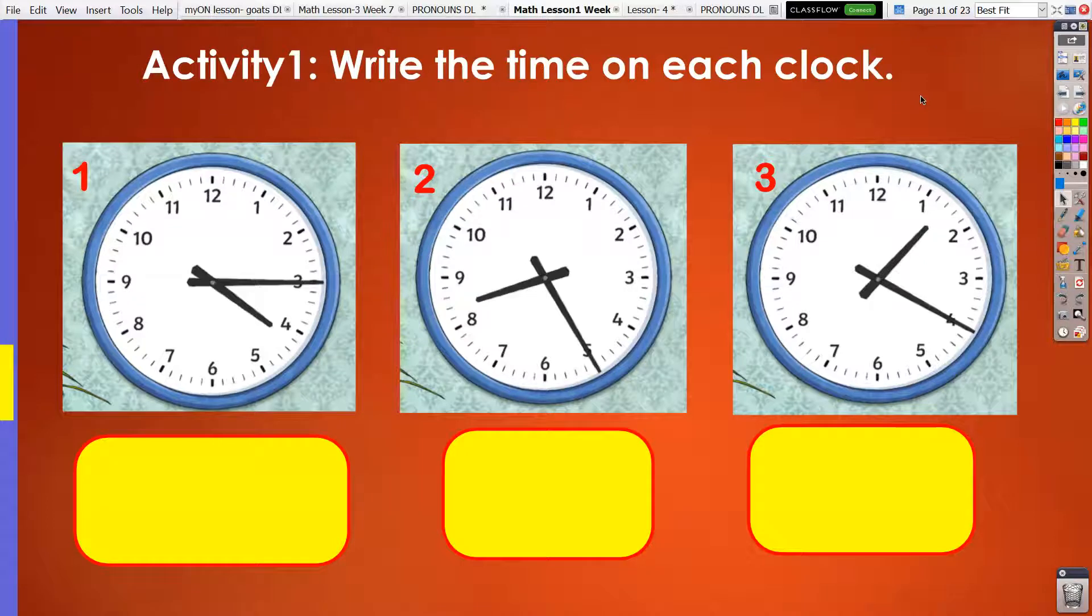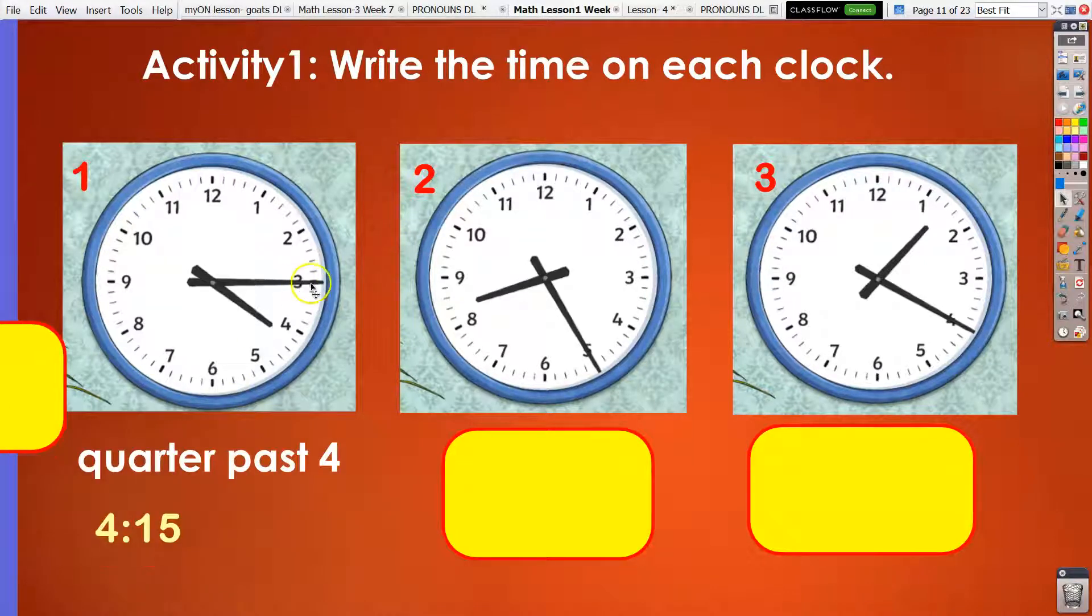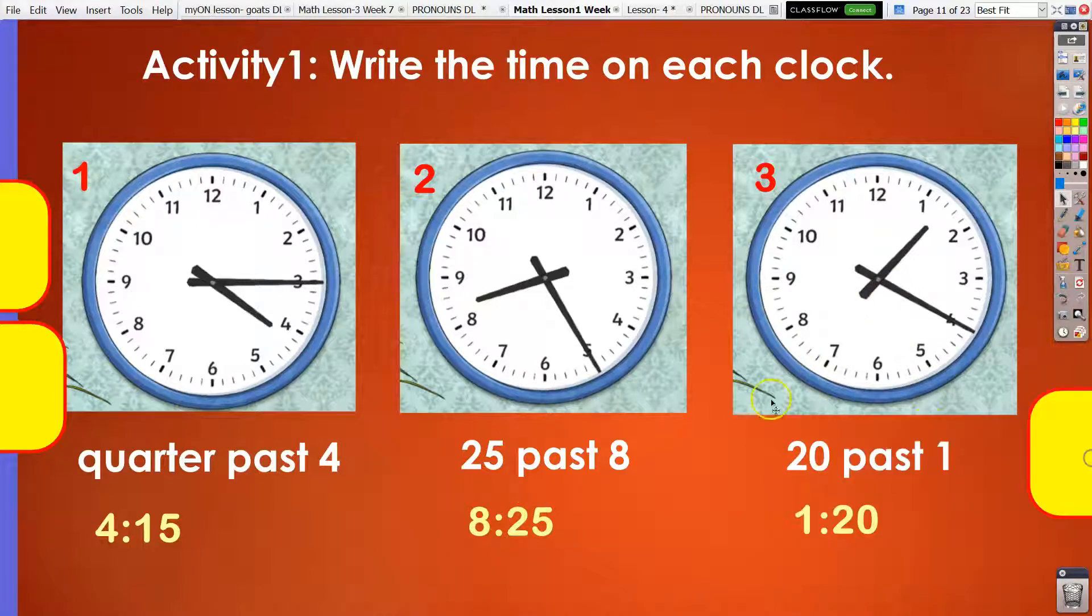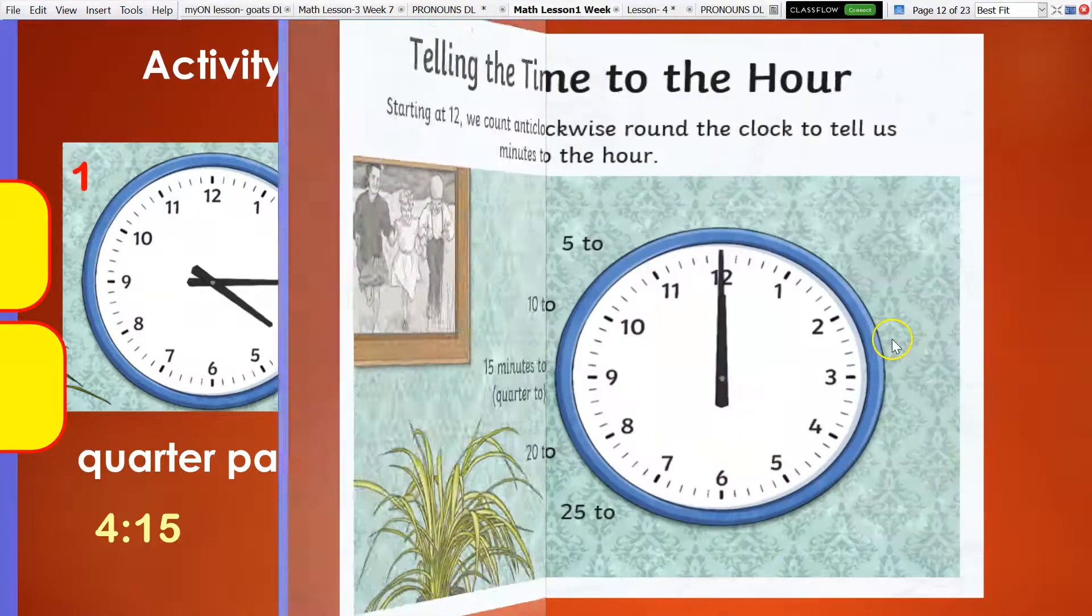Time is up. Now let's reveal the answers. For the first clock, we have quarter past 4, or 4:15. Second clock, 25 past 8, or 8:25. And for the third clock, we have 20 past 1, or 1:20.